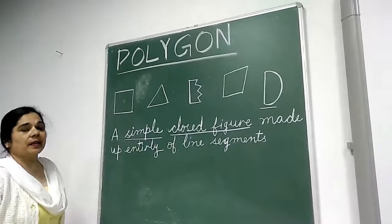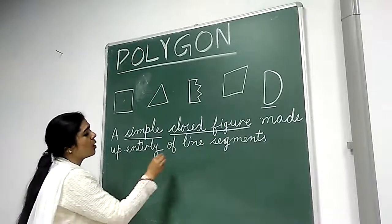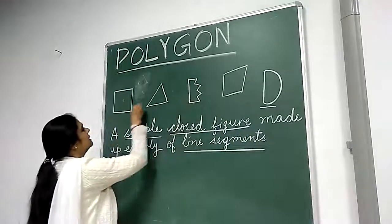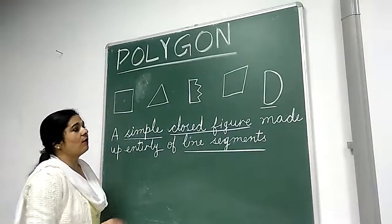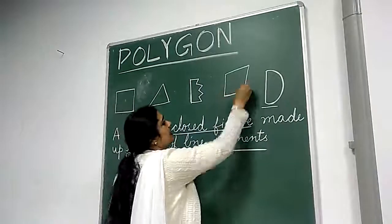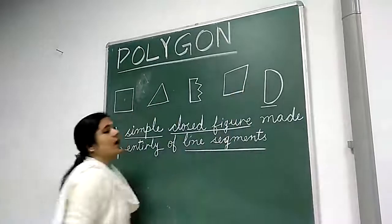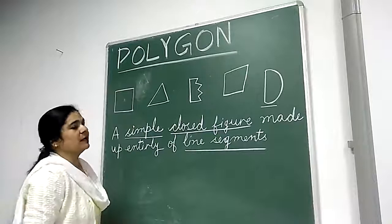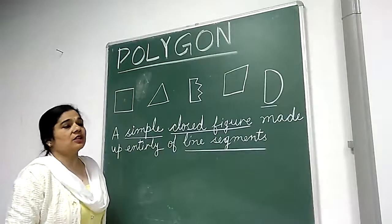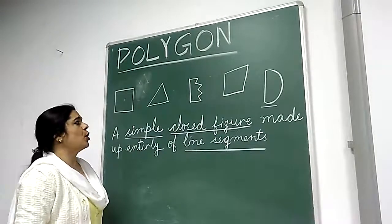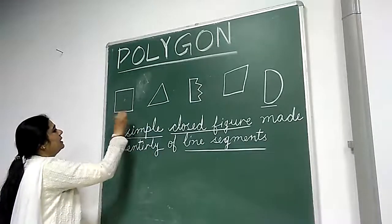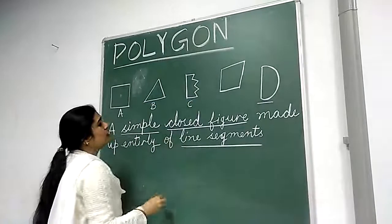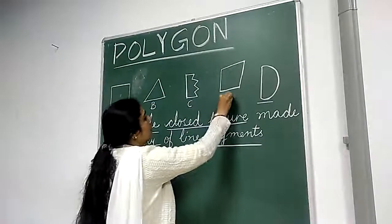Third thing is, it is entirely made up of line segments. See these figures? These figures are made up entirely of line segments. So these are the features of a polygon. We can say figure A is a polygon, figure B is also a polygon, figure C is also a polygon, and figure D is a polygon.